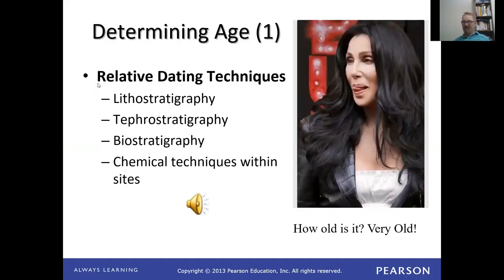So we can read a lot from fossils of the past if we've learned how to do it — and that's part of this class. Now: determining age. We have to know the age of what we're looking at as we talk about sequence and why things look the way they do. Determining age can be relatively difficult. There are two broad categories: relative dating and chronometric dating.